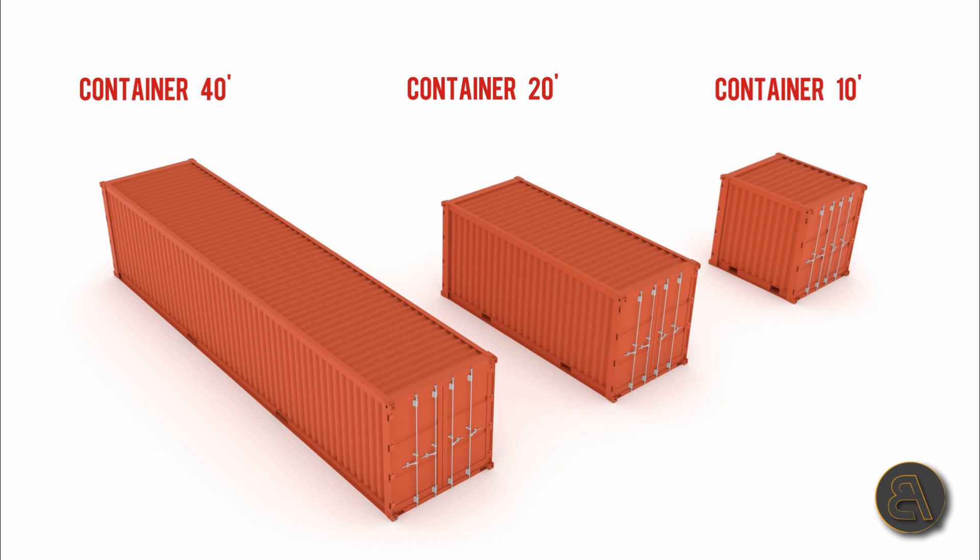What's going on guys, Balkan Architect here. In today's tutorial I'm going to be showing you how to model a parametric shipping container. The parametric part means you'll be able to change the length — shipping containers come in standardized lengths: either 10, 20, or 40 feet, which is 3, 6, or 12 meters.